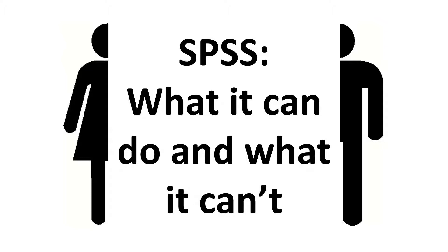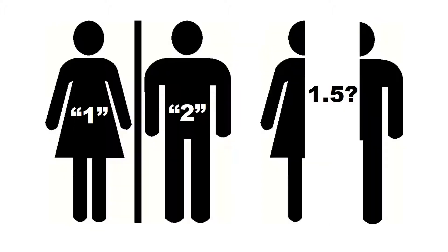In other words, if the data is formatted in a way the program can work with, it'll do whatever we ask it to do. Here's an example of why that's a problem. We can use numbers to identify whether a participant indicated they identify as a male or a female. For this example, we'll think about data that did not include participants who selected other categories. So to make data entry easier, I used 1 to identify female participants and 2 to identify males.